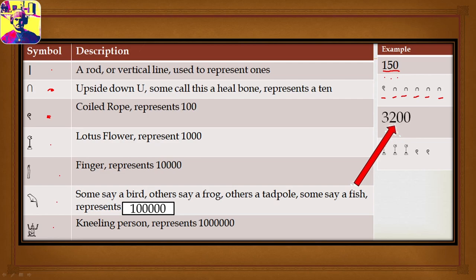For 3,200, we break this down into core components: three thousands, two hundreds, and no tens or units. A thousand is represented by the lotus flower. We would need three of those: one thousand, one thousand, and one thousand. So there's my three thousand represented. One hundred is represented by a coil of rope, and we have two hundreds, so we would have two coils of rope.